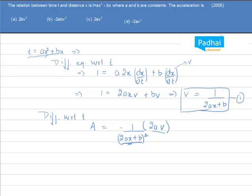So that means I can write it as -v² because [1/(2ax + b)]² = v². So -v² × 2av = -2av³. This is the answer, so option D is correct.